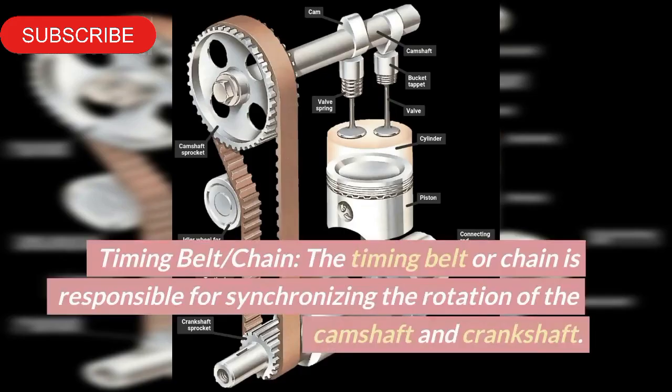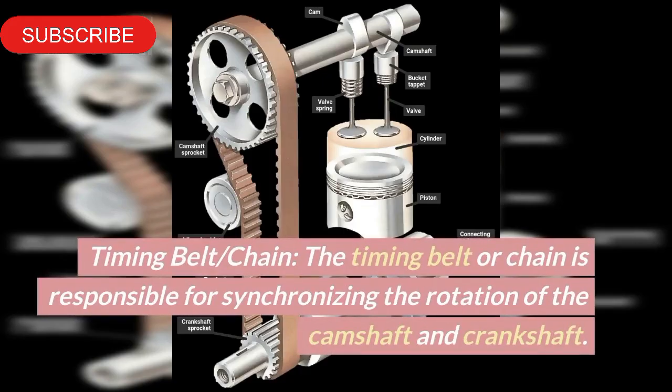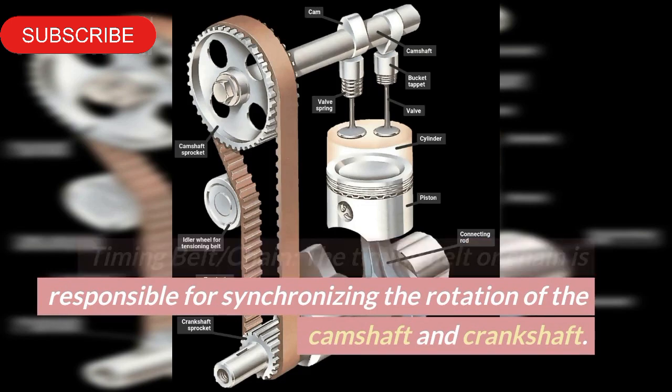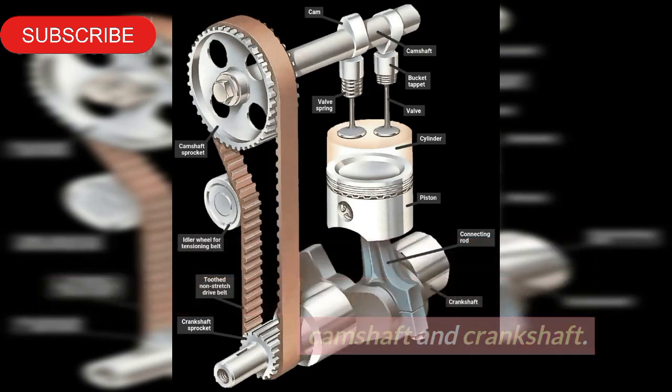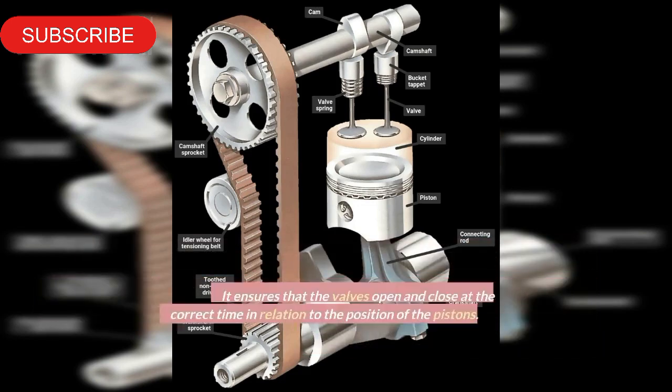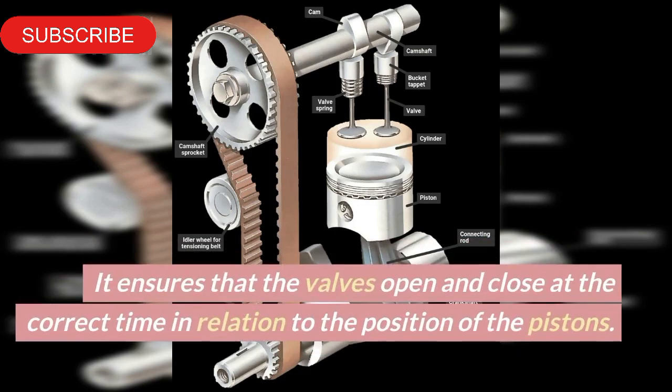Timing belt or chain. The timing belt or chain is responsible for synchronizing the rotation of the camshaft and crankshaft. It ensures that the valves open and close at the correct time in relation to the position of the pistons.